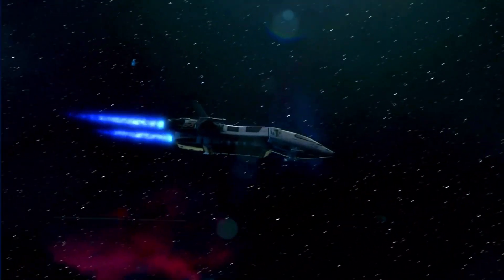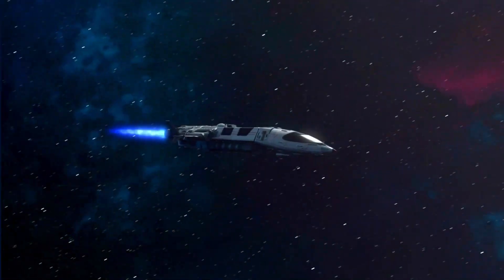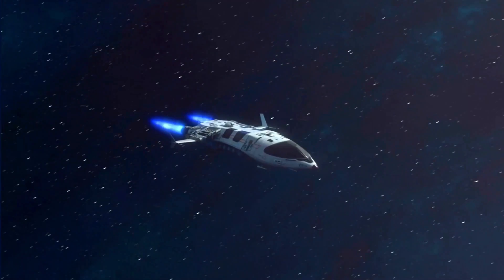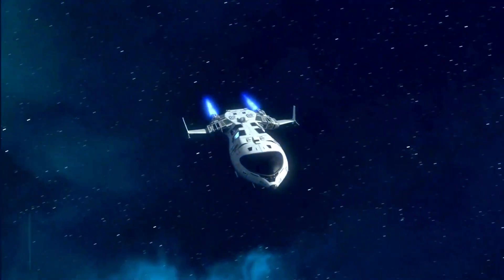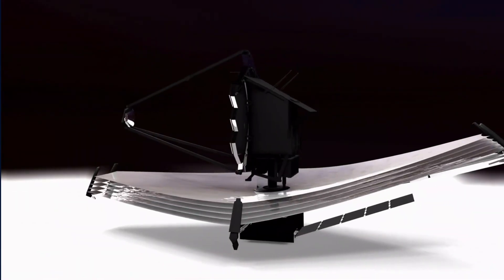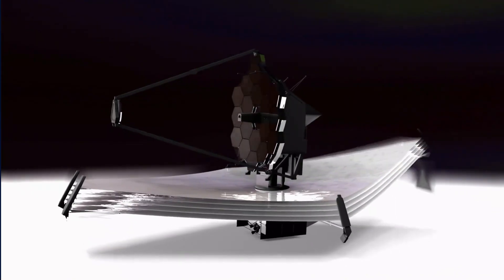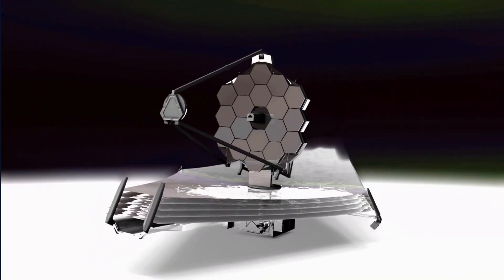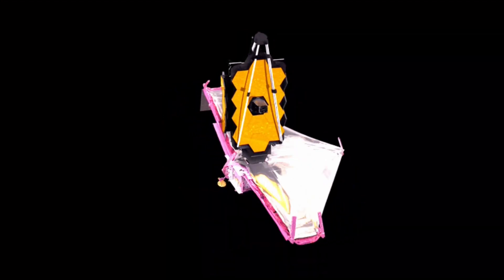At this point, all major spacecraft deployments required to prepare for science operations had been performed successfully. The optics of the telescope would then be aligned by shifting the 18 primary mirror segments, which would take months to complete.